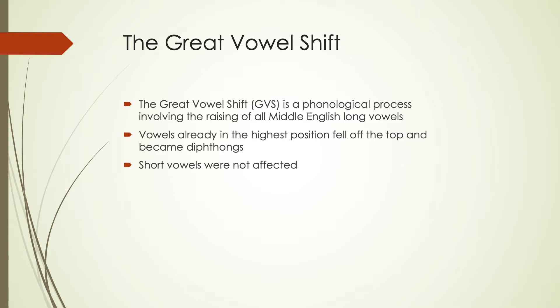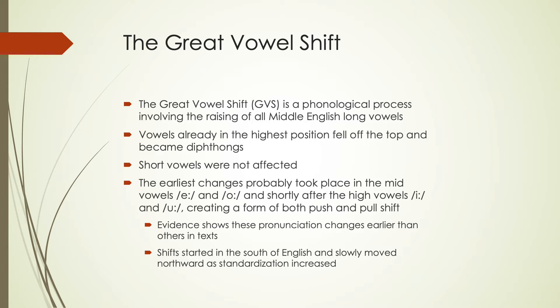Short vowels were not affected by this, which is where we get some distinctions in pronunciation between words that might otherwise be similar. Some of the earliest changes probably took place in the mid-vowels — the long A and long O — based on evidence from earlier texts. After that, the high vowels would have changed. This was a combination of both a push and a pull shift, where the mid-vowels moving first pushed the high vowels out, and also created a pull for the low vowels to move up. The shift started in the south of England and slowly moved northward.